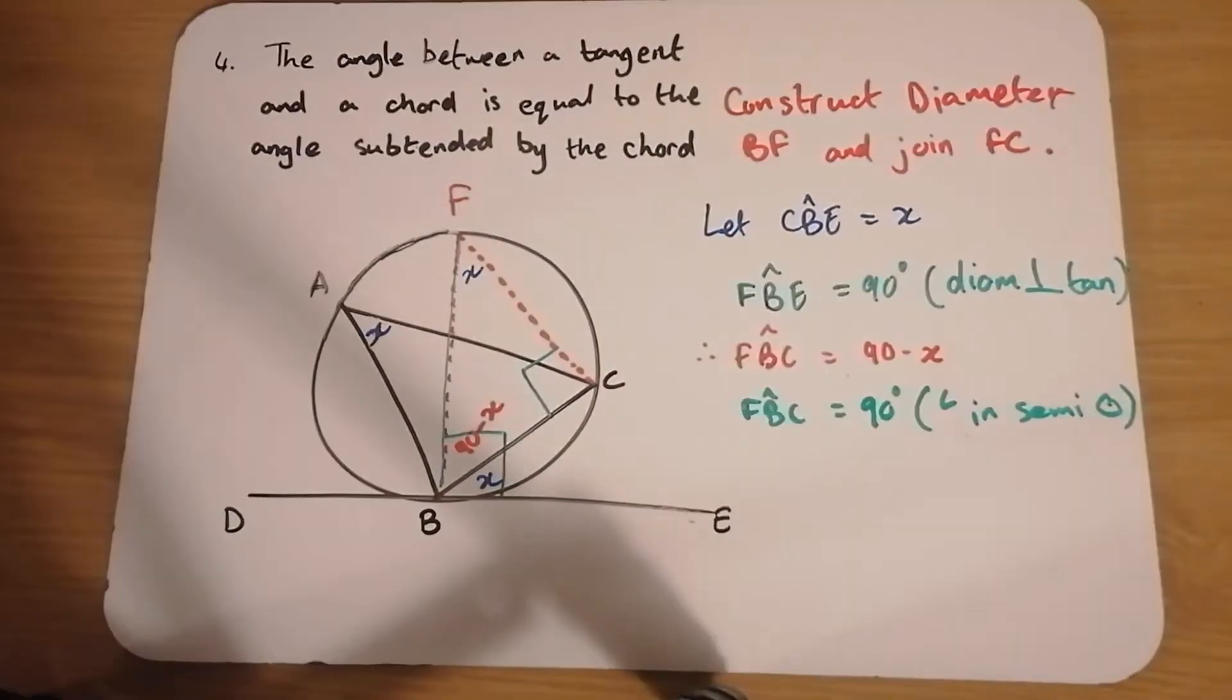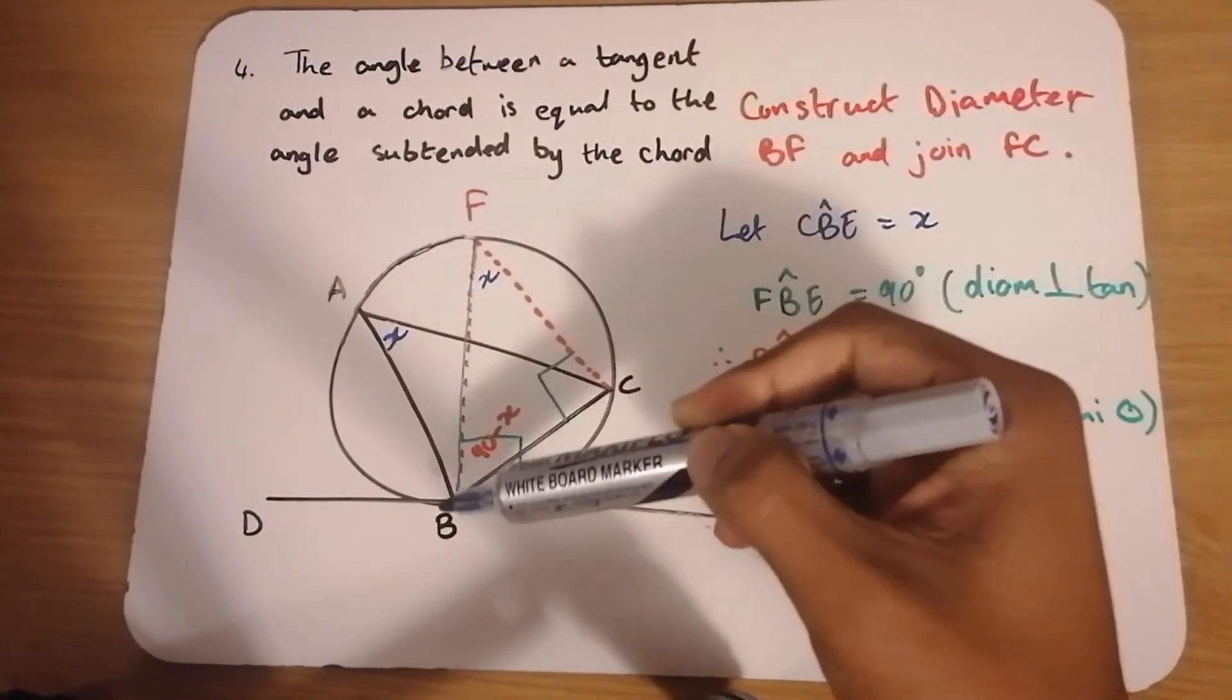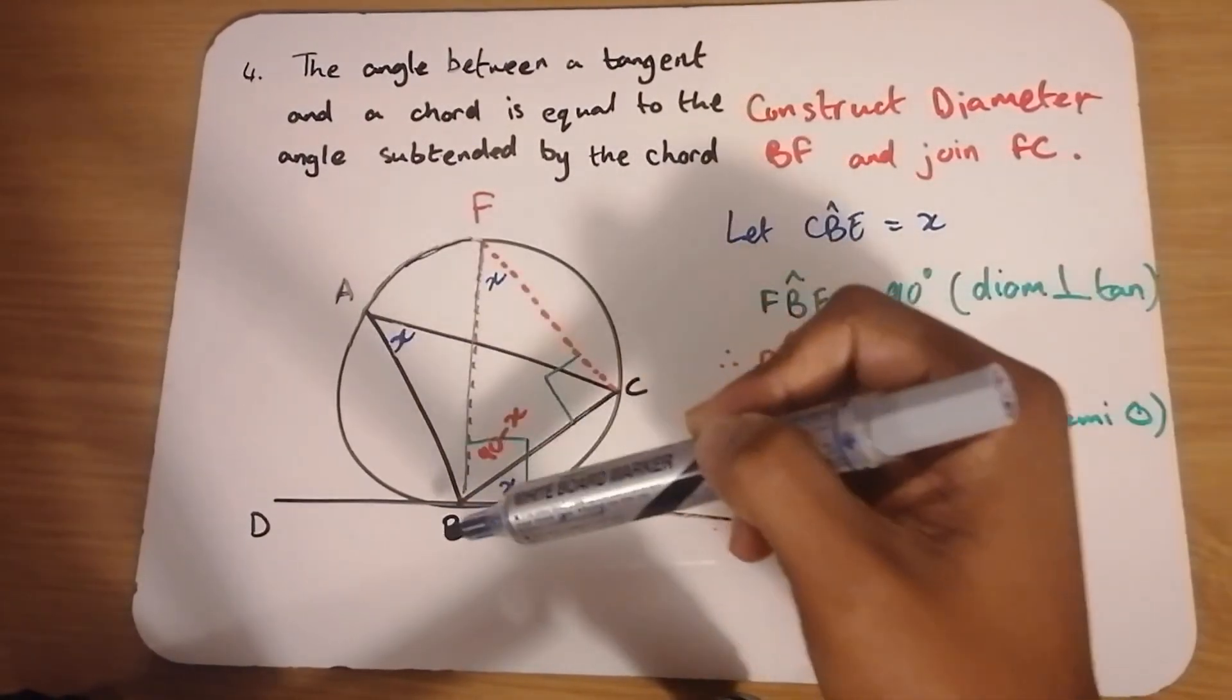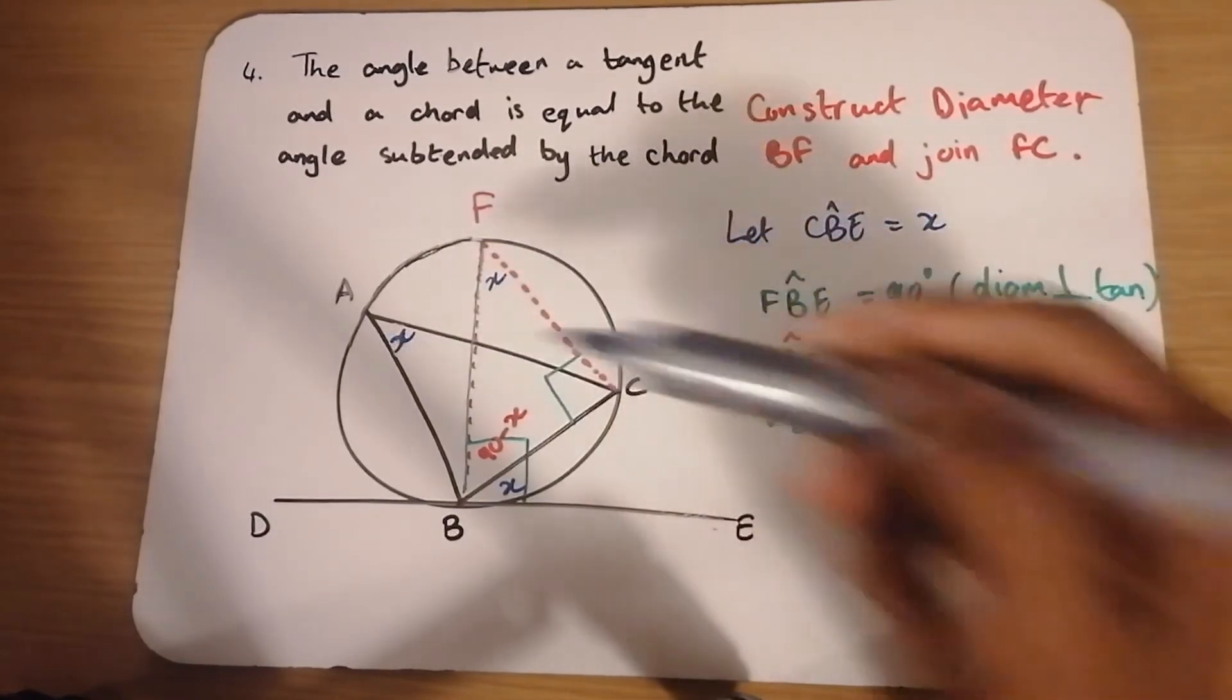Now watch here. If angle F is X, then angle A will also be X. Because these are angles in the same segment. Do you see the bow tie? So if F is X, A is also X.